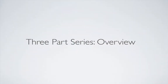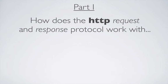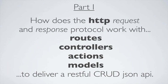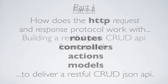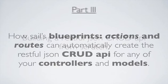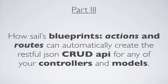Howdy and welcome back. You're watching the third and final installment of our three-part series. In part one, we learned how the HTTP request response protocol works with routes, controllers, actions, and models to deliver a RESTful JSON CRUD API. In part two, we took those concepts and built the API from scratch. In this episode, we'll explore Sails blueprint actions and routes, a powerful combination of functionality that are often used but not always fully understood. The goal of this episode is to show you what the blueprints are all about and how to use them to make your programming life a bit easier.